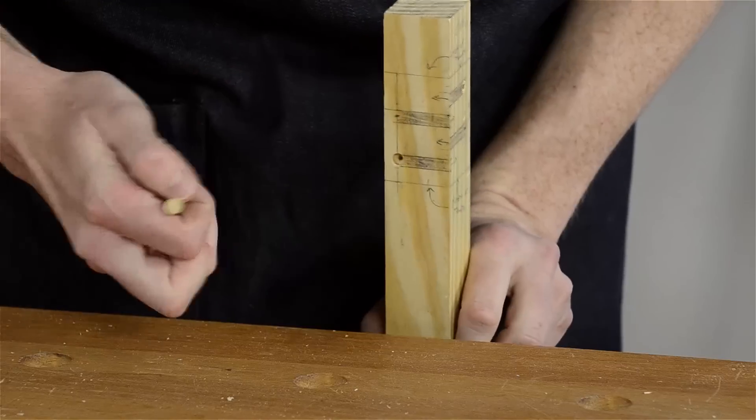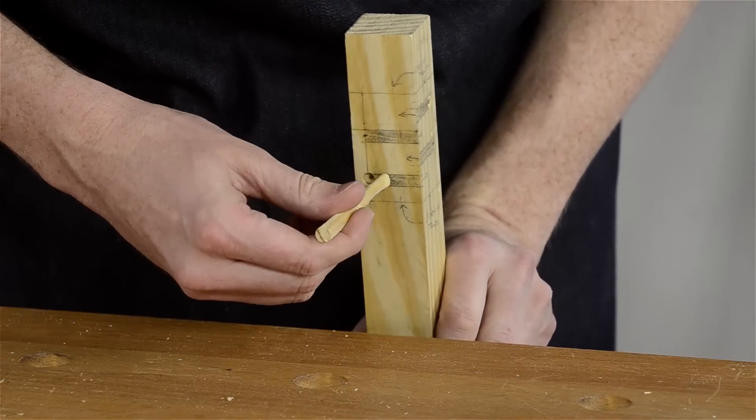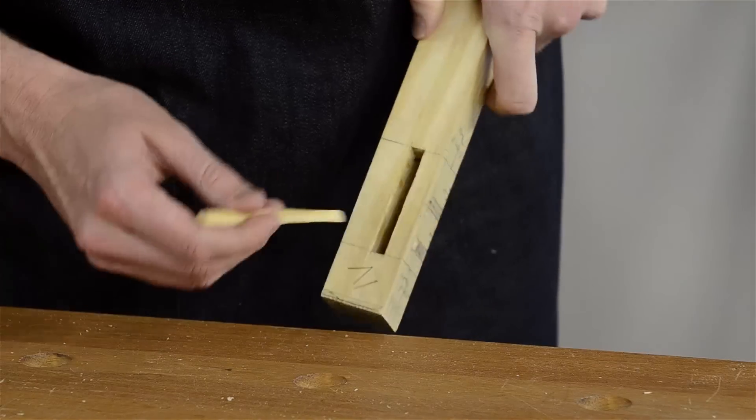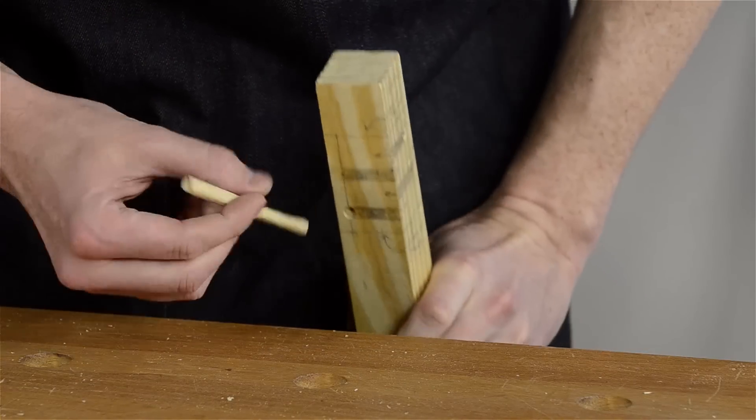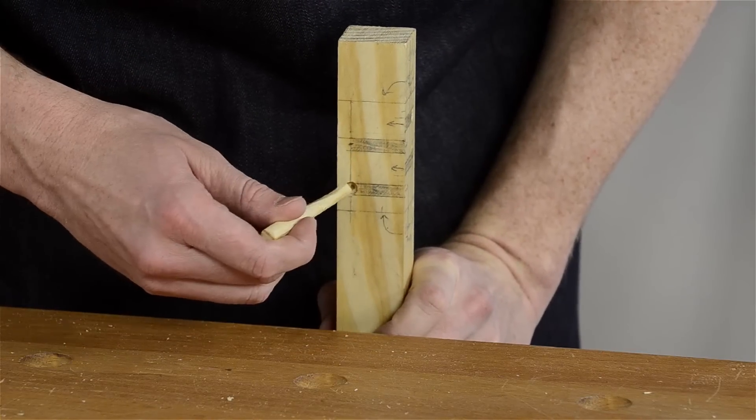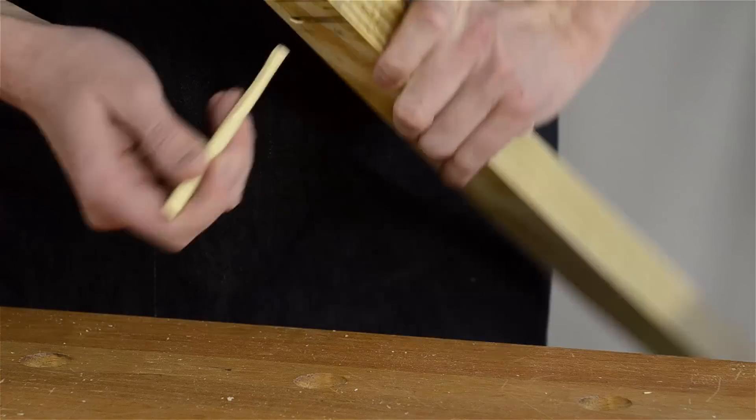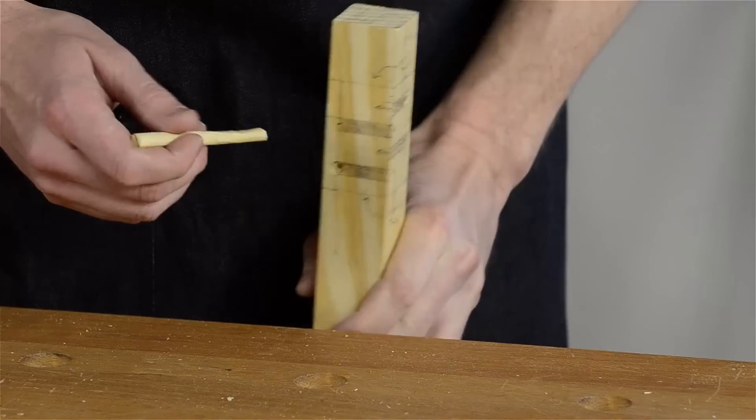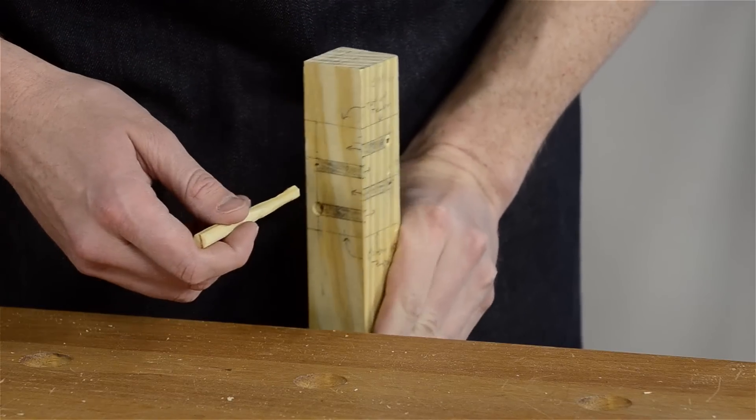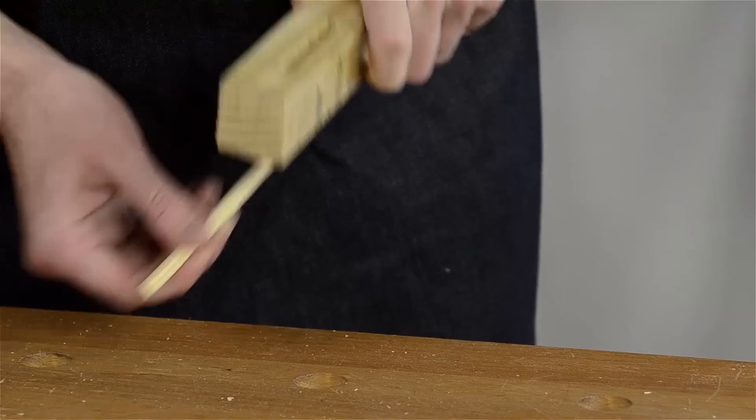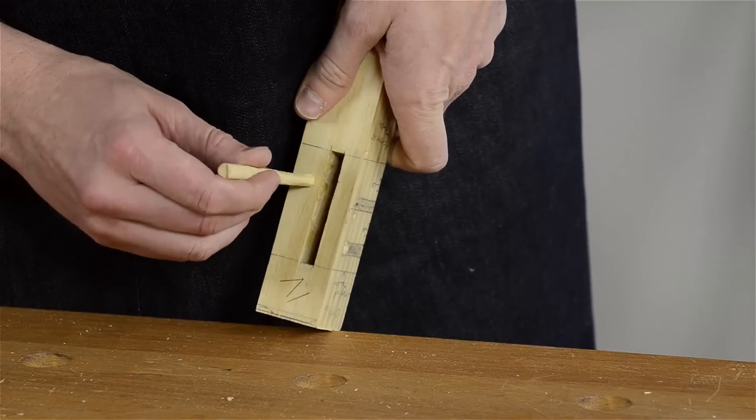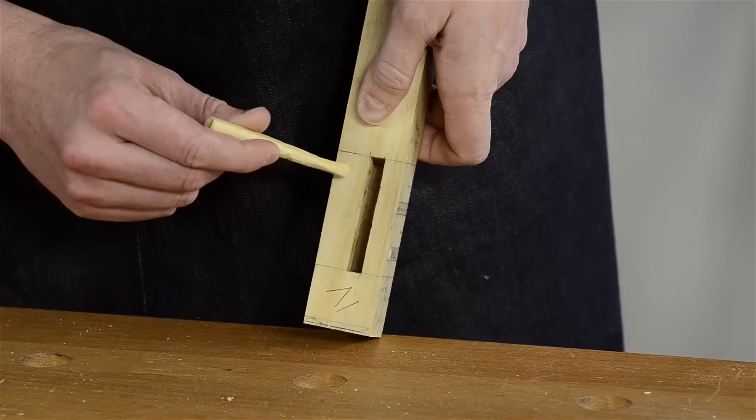If you were to go too far that way, you'd be coming through the mortise there. And if you were to go too far this way or here, you'd be exiting the whole joint. So what I like to do is just find a middle ground or a middle spot somewhere in there and mark it on this other side.